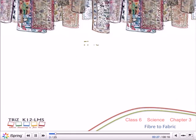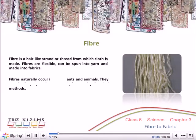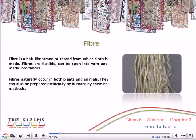A fibre is a hair-like strand or thread from which cloth is made. Fibres are flexible and can be spun into yarn and made into fabrics. Fibres naturally occur in both plants and animals. They can also be prepared artificially by humans through chemical methods.